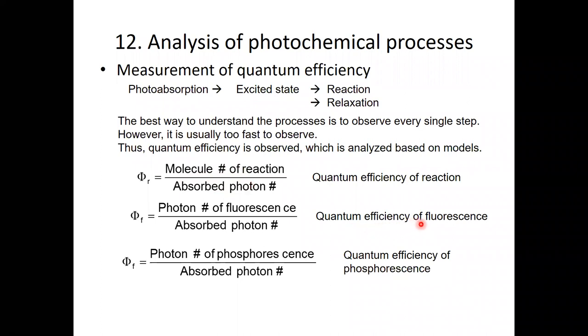The other is quantum efficiency of fluorescence, which was studied in the previous lecture. This is photon number of fluorescence divided by absorbed photon number. And also you can use quantum efficiency of phosphorescence. Here the difference is photon number of phosphorescence. So you could detect these values and confirm if your model is correct or not.